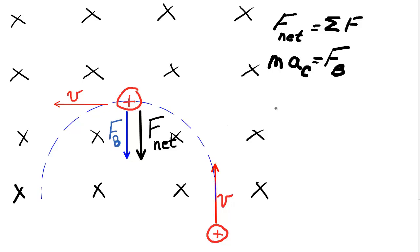Subbing in for AC, we get MV squared over R is equal to our magnetic force, which we now know as the formula QVB. Q is the charge of the object moving through the magnetic field, V is the velocity, and B is the external magnetic field.